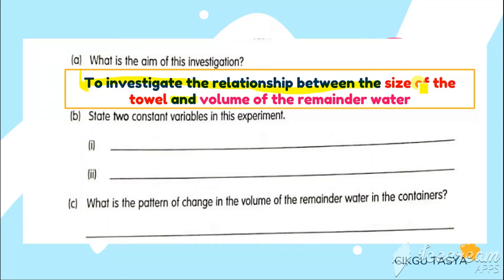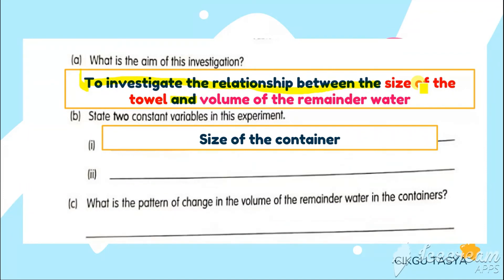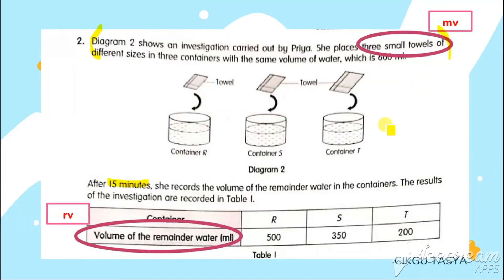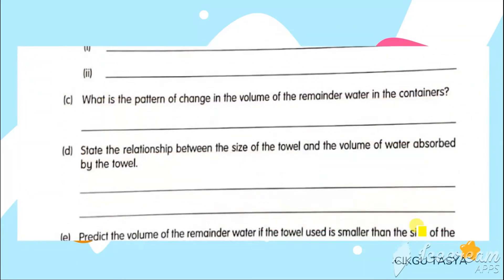State the two constant variables in this experiment. Which one didn't change at all? Size of the container and also the initial volume of water. Because the size of the container are the same and the initial volume of water, every container receives the same amount of 600 ml of water. What is the pattern of the volume? It's decreasing and it doesn't increase. So, decreasing. You can see, it's decreasing. 500 to 350 to 200.